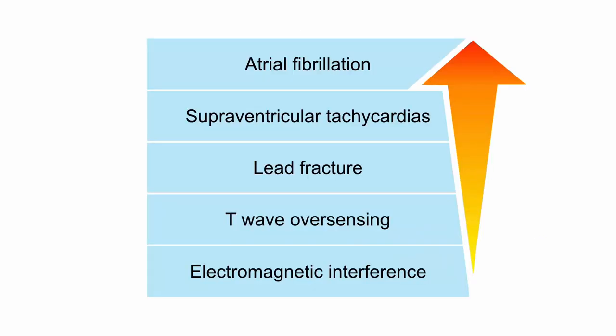Inappropriate shocks happen, and these are the main causes. Atrial fibrillation is the most common cause, and then in order we have supraventricular tachycardias, lead fractures, T-wave oversensing, and electromagnetic interference. In this presentation we're just going to cover those and show exactly how they lead to an inappropriate shock.